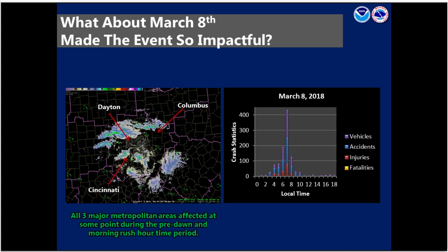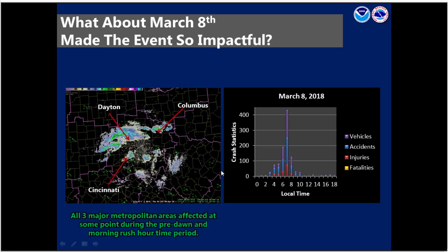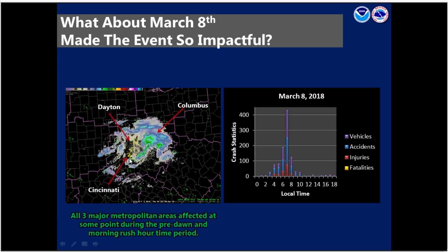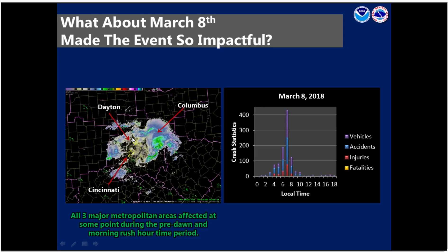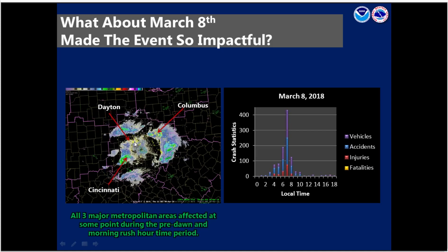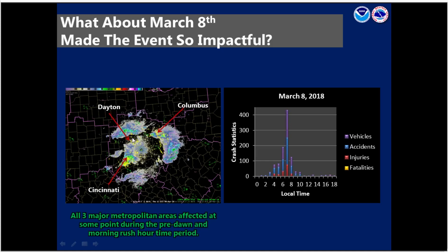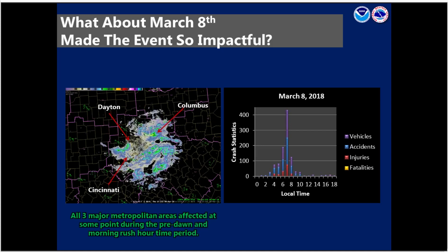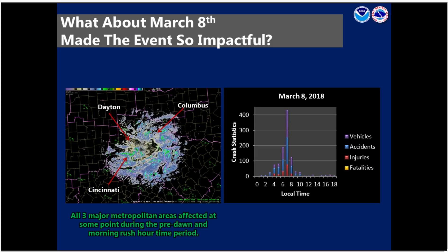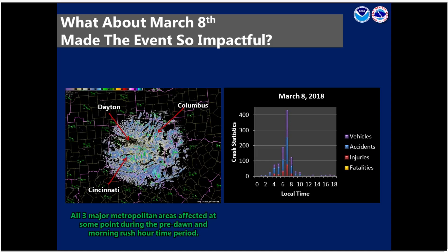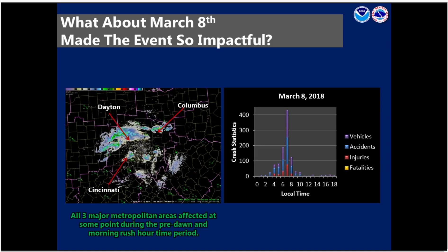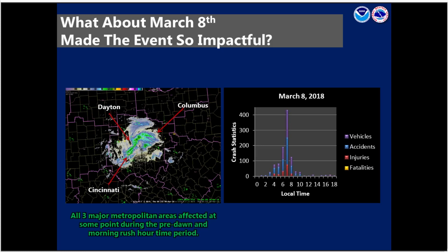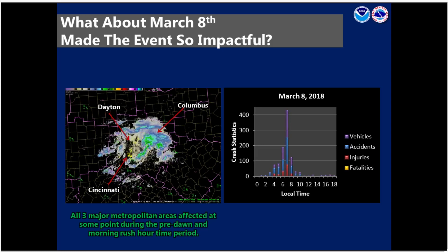Moving on to the next slide, we have a time-lapse. There are little yellow circles showing ones, twos, or in one case fives — representing the different injuries that occurred with accidents during this event. The timeframe of this loop goes from about 5:30Z to around 17Z, with local time shown on the right for when accidents occurred. We can see that all three major metropolitan areas were affected at some point during the pre-dawn and morning rush hour, with some accidents occurring with the squall itself and a lot of lingering accidents as well.